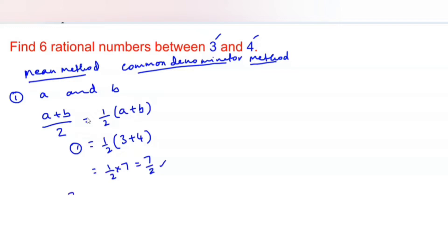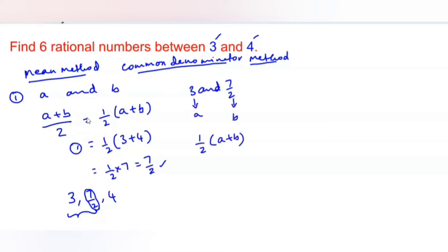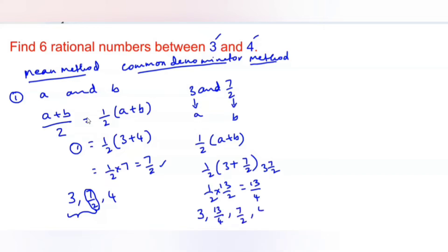Our rational numbers are now 3, 7 by 2, 4. We can also find a rational number between 3 and 7 by 2. Following the same method, half of a plus b is half into 3 plus 7 by 2. That is half into 13 by 2, which is 13 by 4. So our rational numbers are now 3, 13 by 4, 7 by 2, and 4 — we have found two rational numbers between 3 and 4.